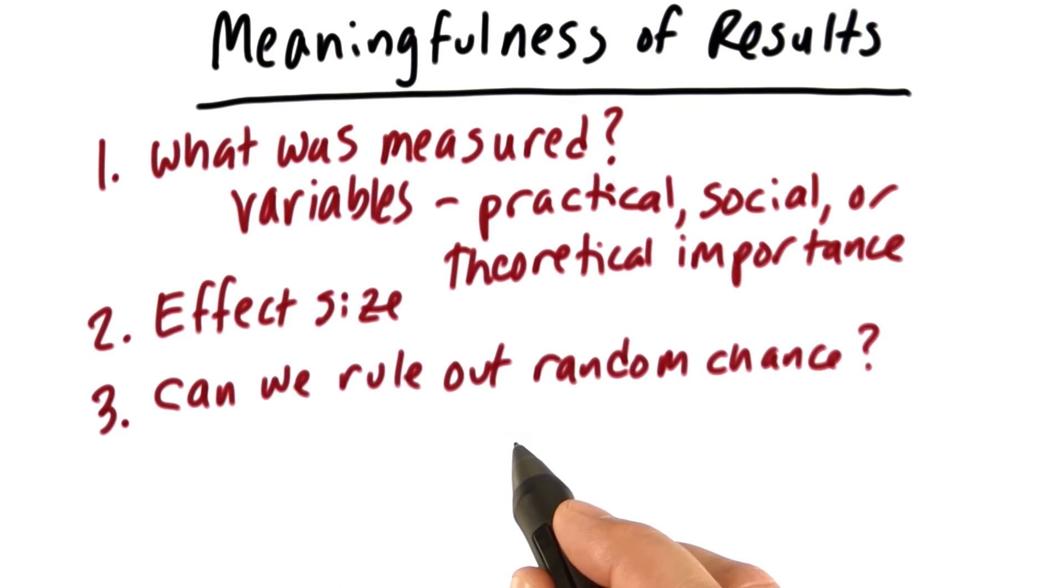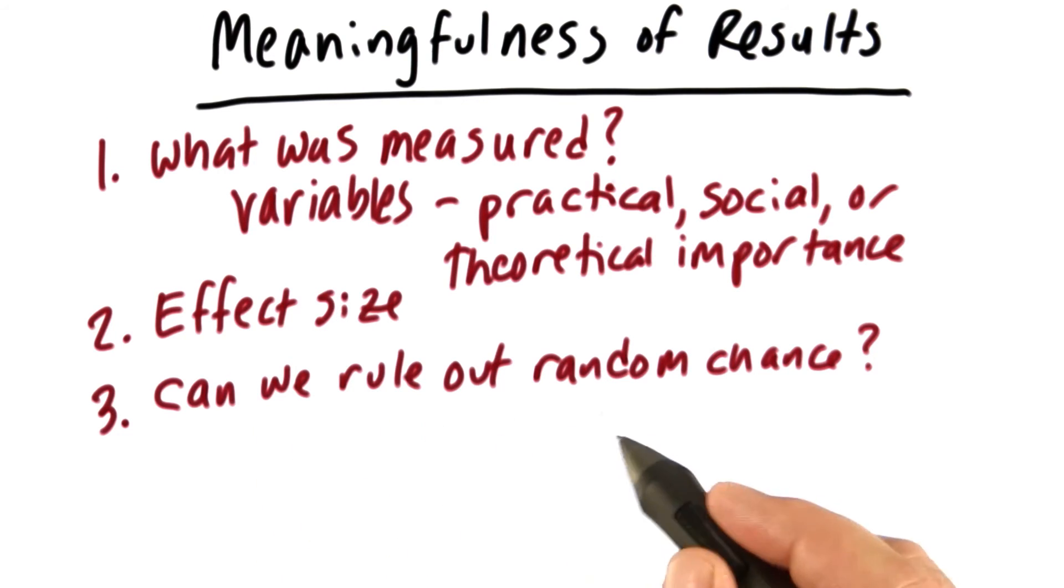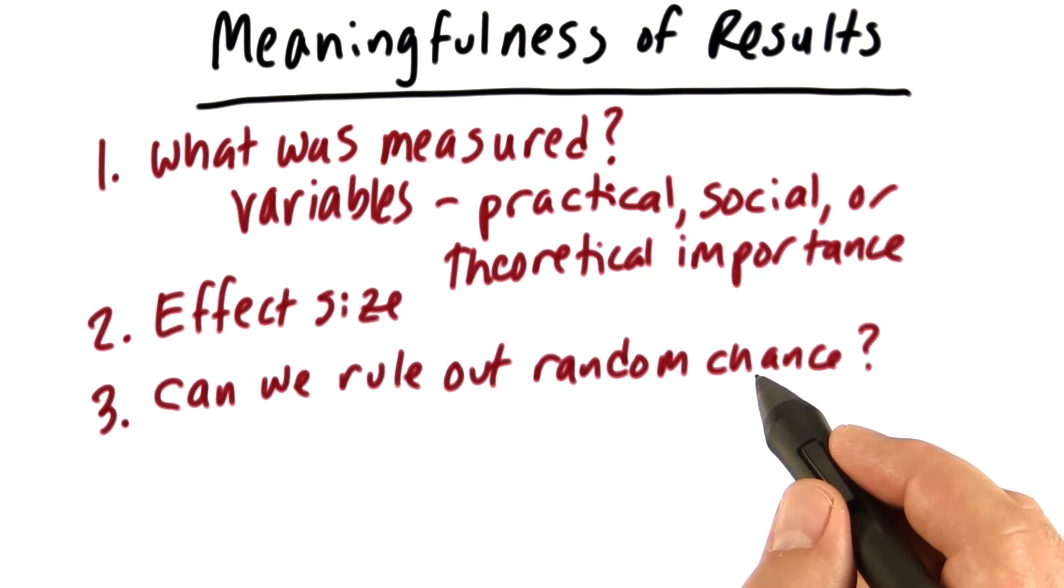A final thing to consider is, can we rule out random chance for the results? In other words, can we rule out sampling error as an explanation? Now, this doesn't guarantee that our results are important, but it goes a long way into helping us assess the rest of the importance.